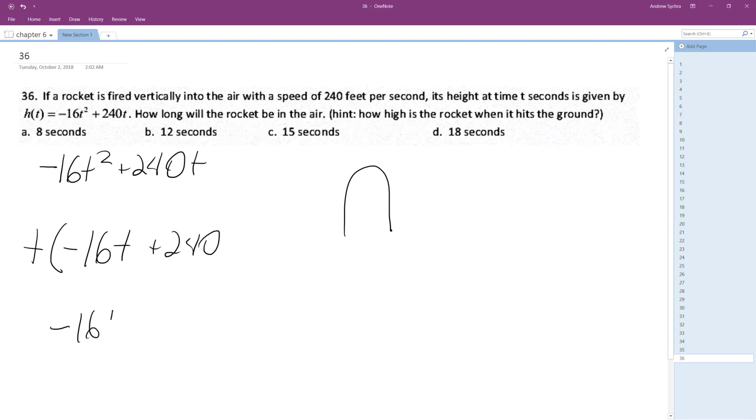So negative 16 t is equal to negative 240, and then I'm solving for inside, because t is equal to zero out here.